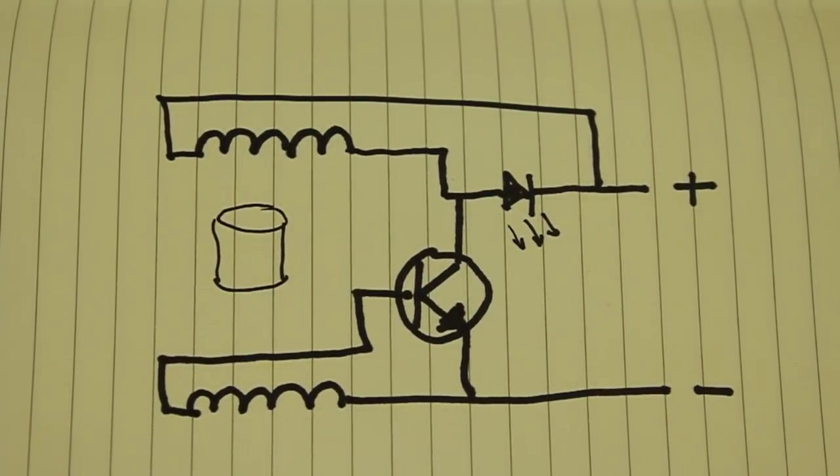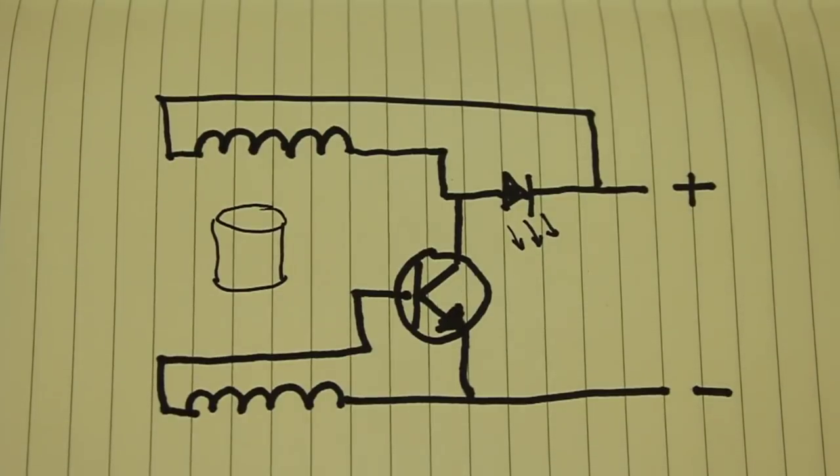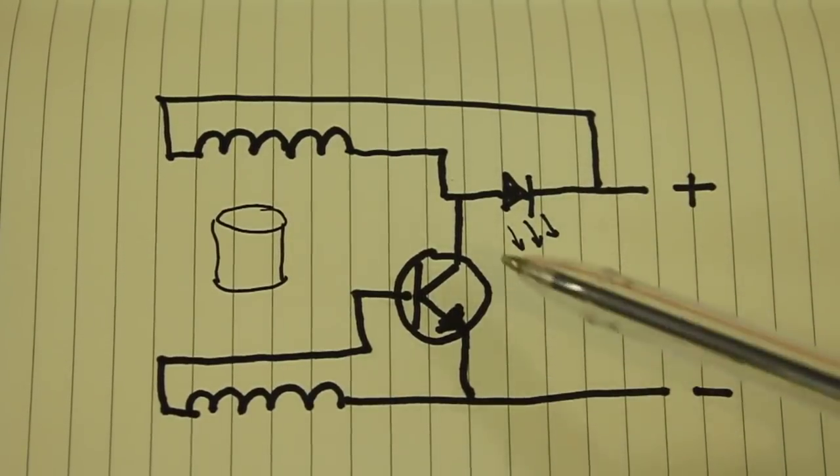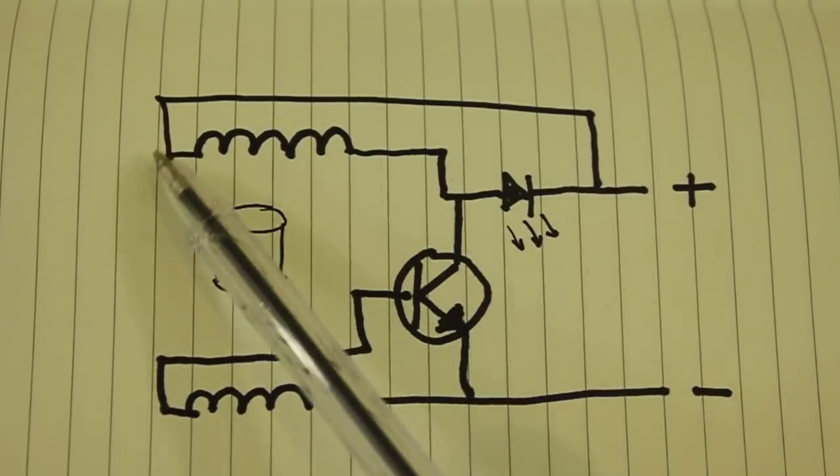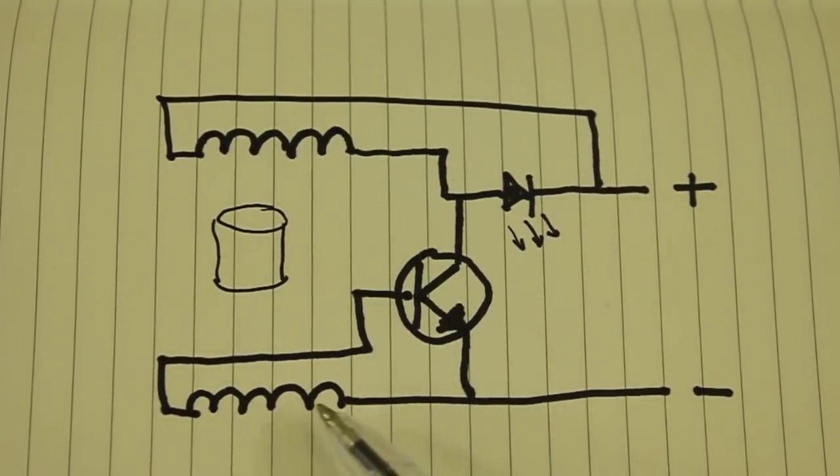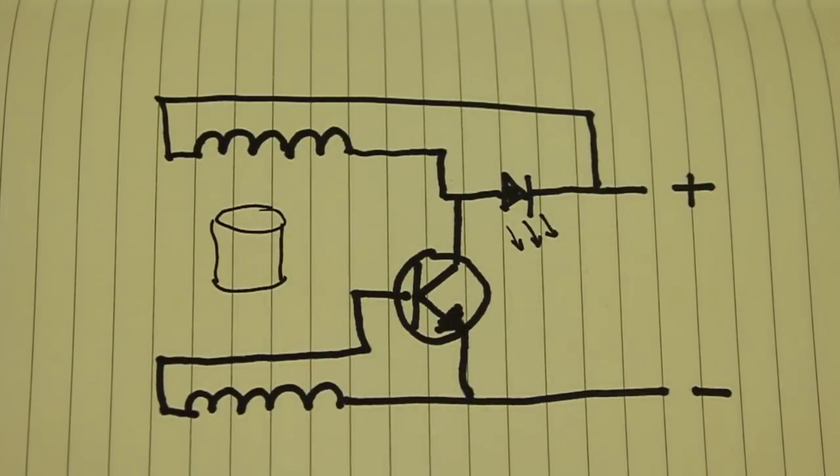Here we have the schematic of the motor. It is very simple. LED, transistor, and the two coils. The upper coil start and end and lower coil start and end, and the neodymium magnet in the middle.